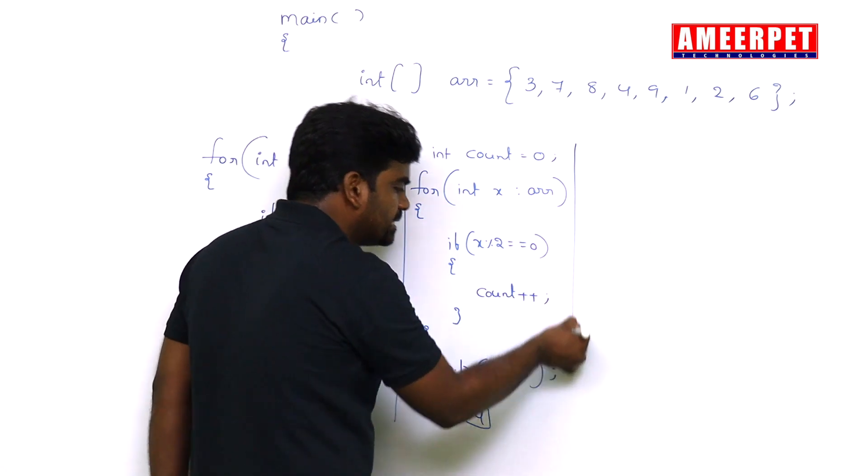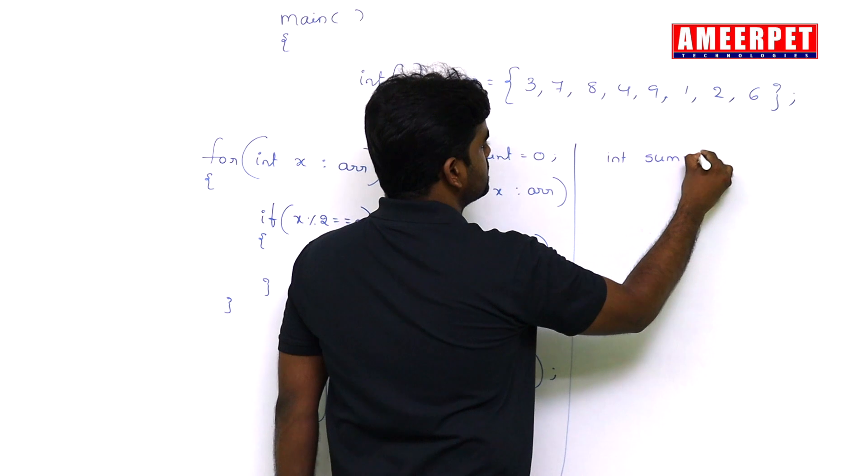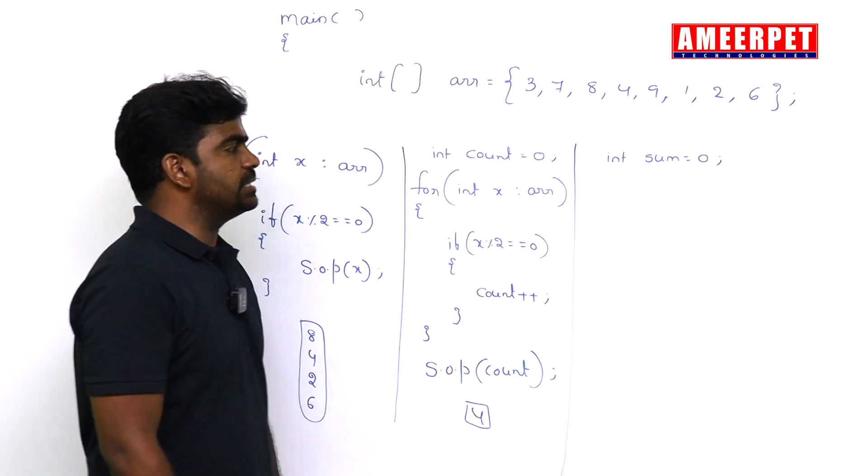Now I just want to find the sum. So in place of count, take the variable is sum equals to zero.